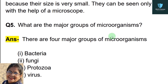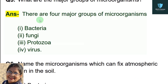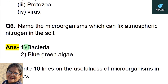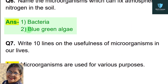Question number 5: what are the major groups of microorganisms? Answer: there are four major groups of microorganisms — first bacteria, second fungi, third protozoa, fourth virus.